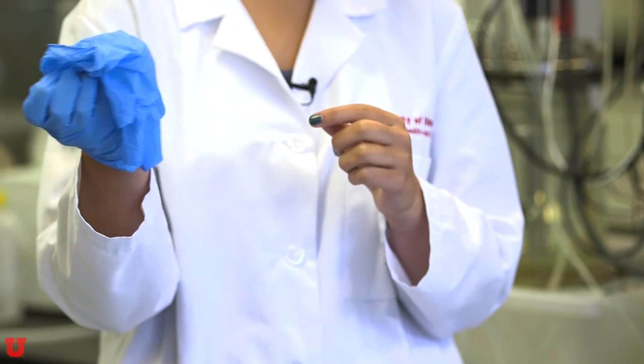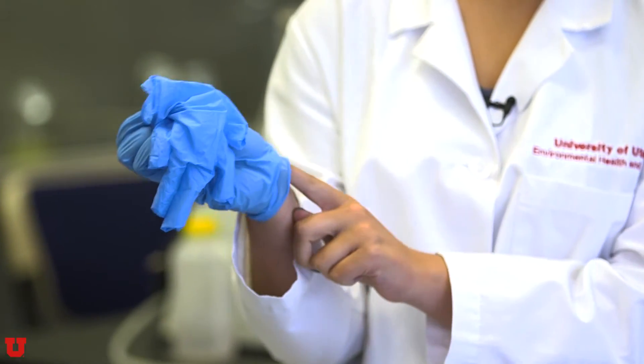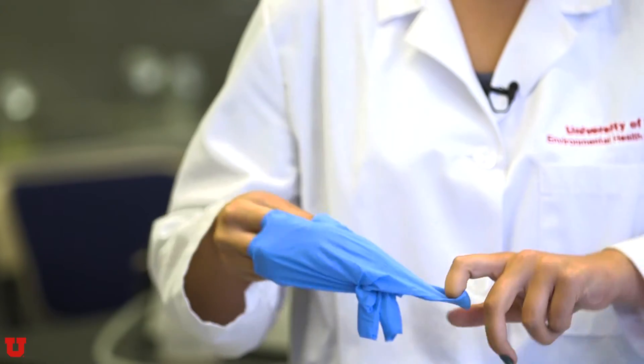To remove your gloves properly, take your right hand and grab your left palm, making sure you're not touching the outside of the glove. Pull it off and use your clean finger to put underneath the right glove, making sure never to touch the outside.